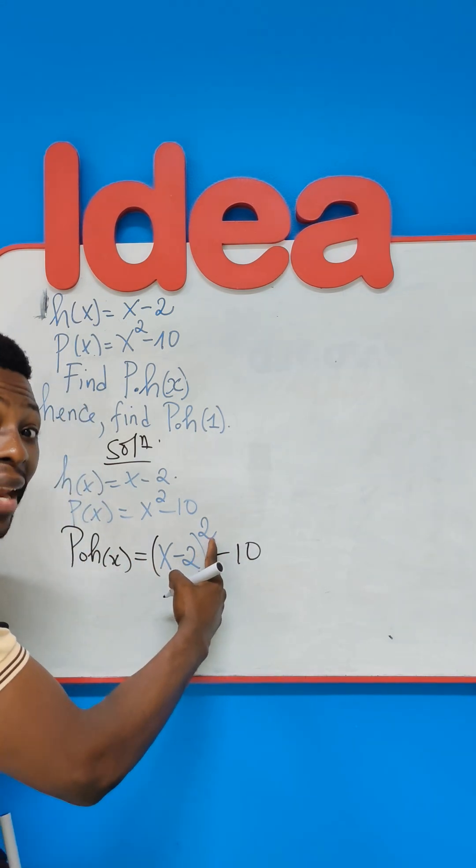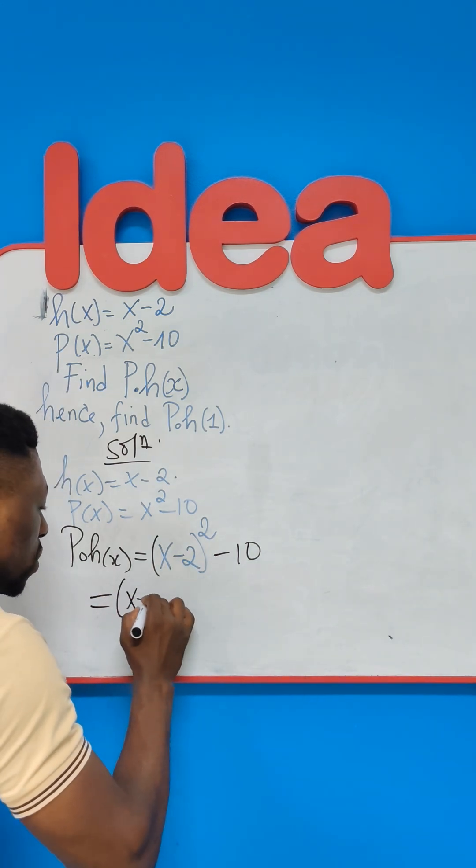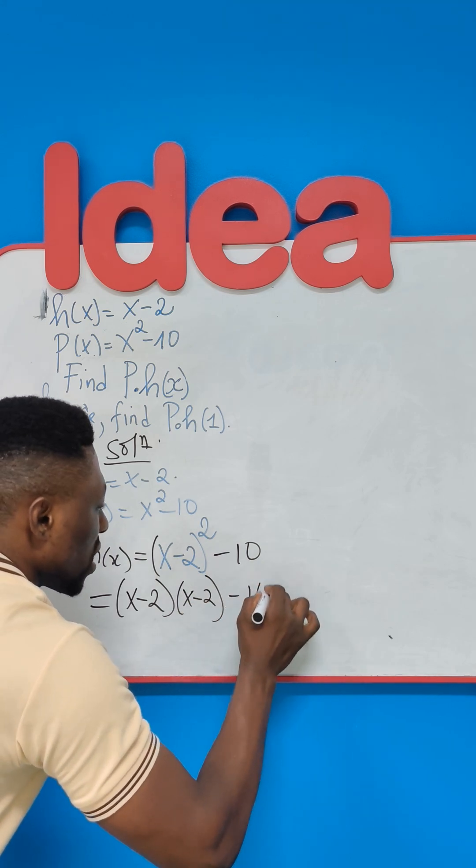Of course, we have to expand and simplify this, which if you do correctly, gives you X minus 2 into X minus 2 and then minus 10.